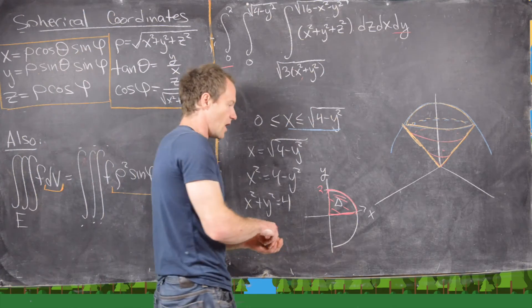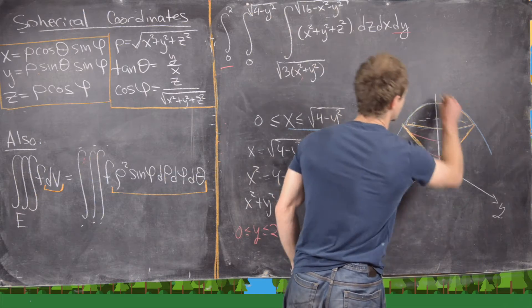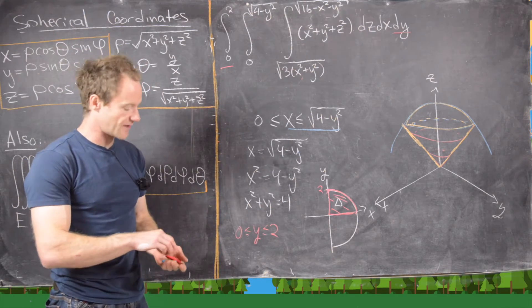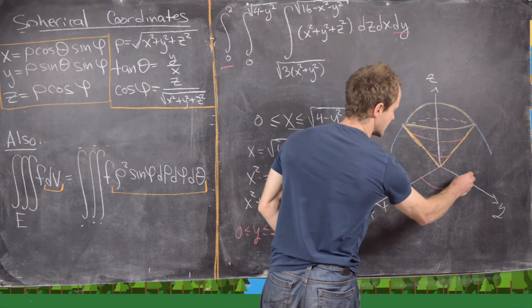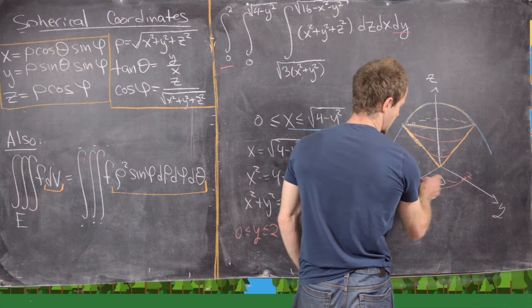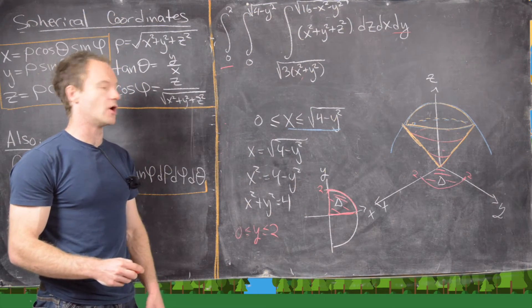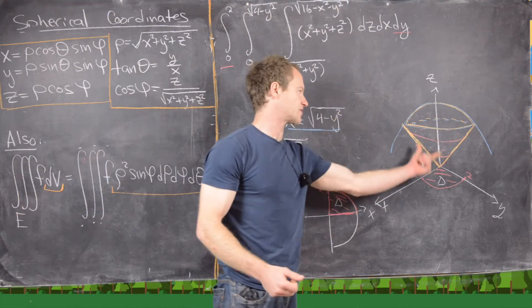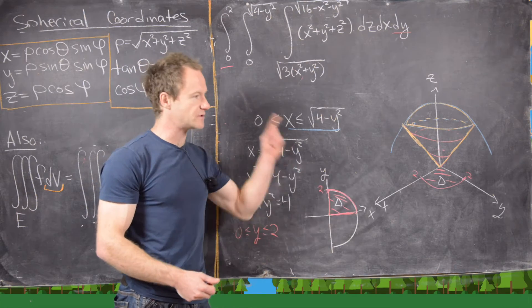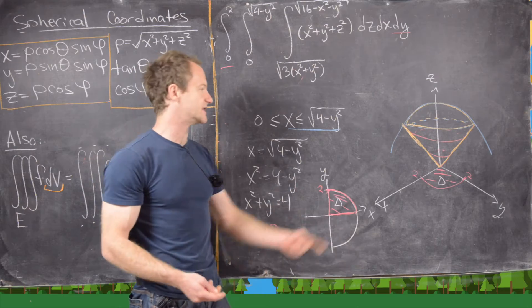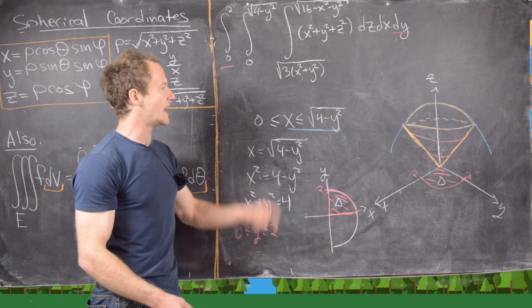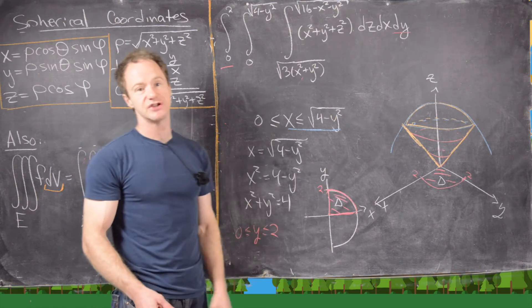What we really want is the region of the ice cream cone that is above this quarter circle. You can visualize it as a really frozen ice cream cone that you can cut into quarters — we're taking one quarter of that cone. Now we're ready to write this region in terms of spherical coordinates.